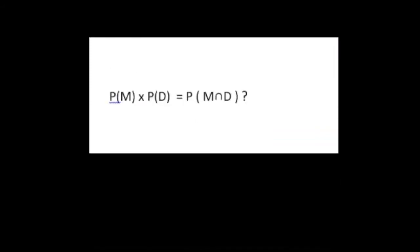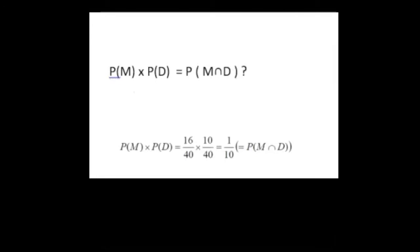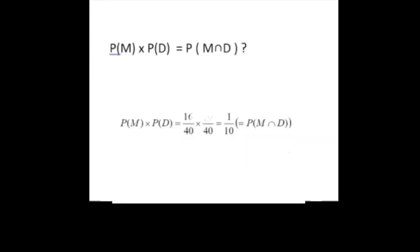Does P(M) times P(D) equal P(M∩D)? P(M) is 16 out of 40 and P(D) is 10 out of 40. Multiplying these gives 160 over 1600, which is 1/10 — and that is in fact P(M∩D). Since P(M) × P(D) = P(M∩D), they are statistically independent.